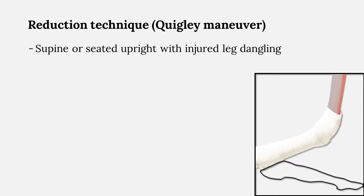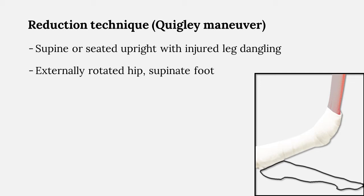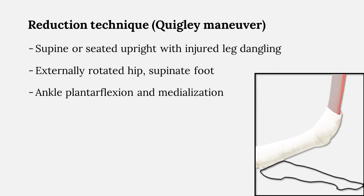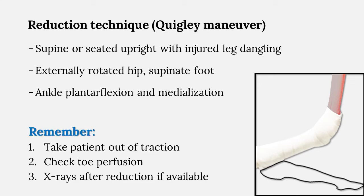The patient can be supine or seated upright with the injured leg dangling from a chair or table. If the patient is supine, externally rotating the hip facilitates this positioning. Typically, the foot is supinated, the ankle placed in slight plantar flexion, and the ankle is medialized. After reduction is achieved and the ankle is splinted, it is important to take the patient out of any traction, check perfusion of the toes, and if available, obtain an x-ray after reduction is achieved.